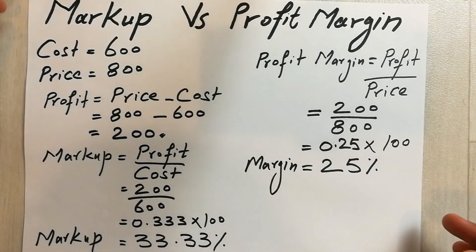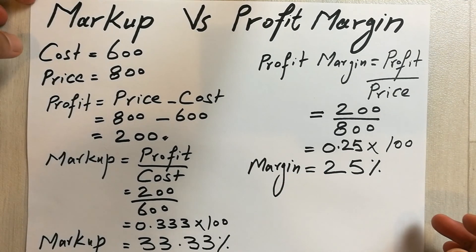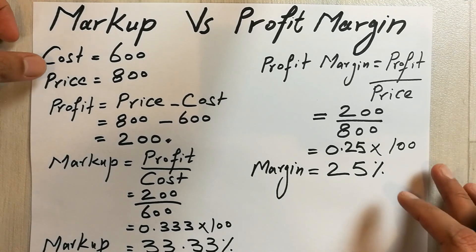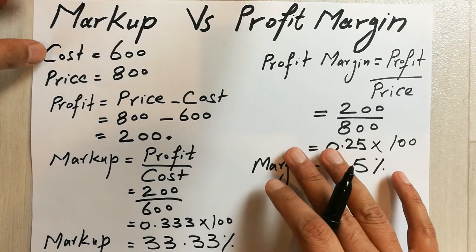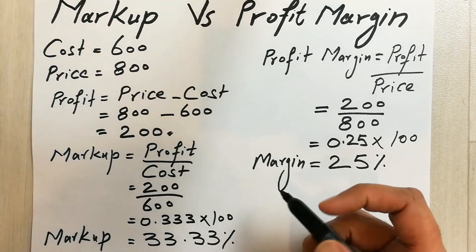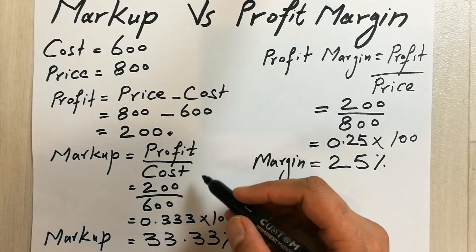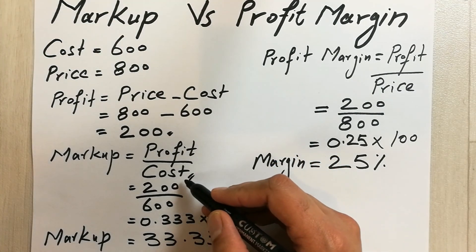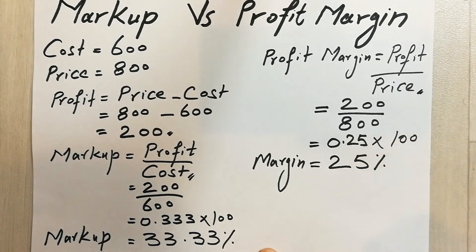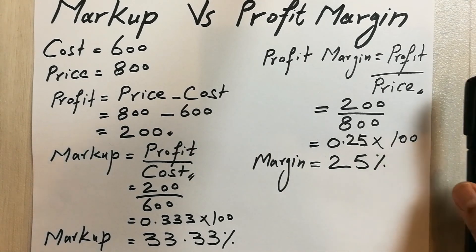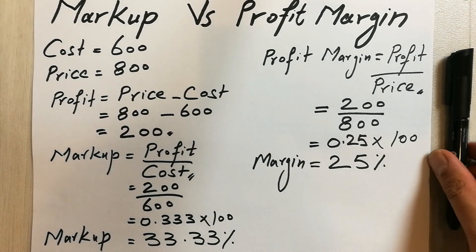This is how you can calculate markup and profit margin. There is a very small difference in the formula — for markup we divide profit by cost, and for profit margin we divide profit by price. If you have any questions you can ask in the comments. Please like and subscribe. Thank you very much.